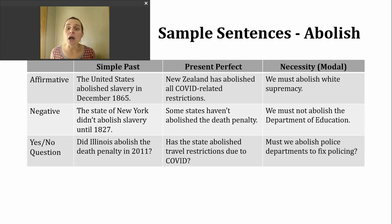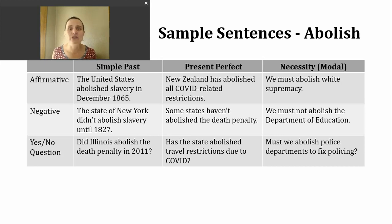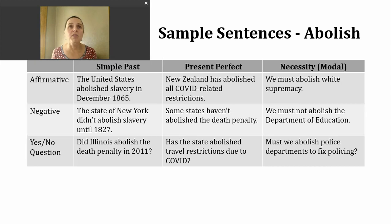If we want to make a negative sentence in the present perfect, we're going to insert 'not' after 'has' or 'have,' depending on our subject. You might notice native speakers using the contraction forms 'hasn't' or 'haven't.' Here's an example: Some states haven't abolished the death penalty. Again, another true statement — there are several states that have this as a law.